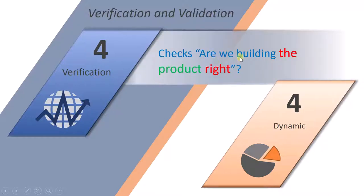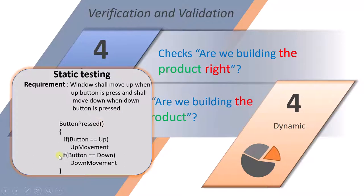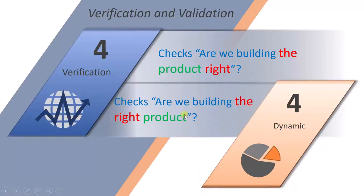The fourth point is very interesting: in verification we check whether we are building the product right, whereas in validation we check whether we are building the right product. The difference is: when writing code, we verify each line against the requirement — are we preparing the product correctly? If there is anything wrong in a line, we are not building the product right. In dynamic testing, we check whether what we have built is working — that is, is this the right product?